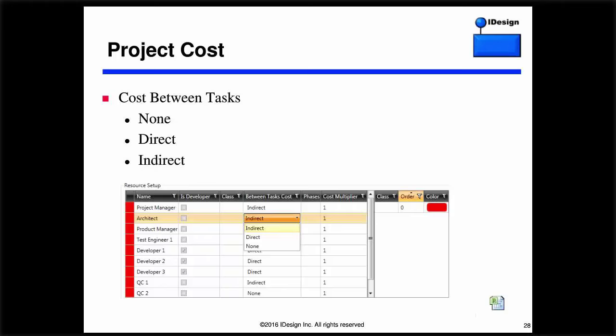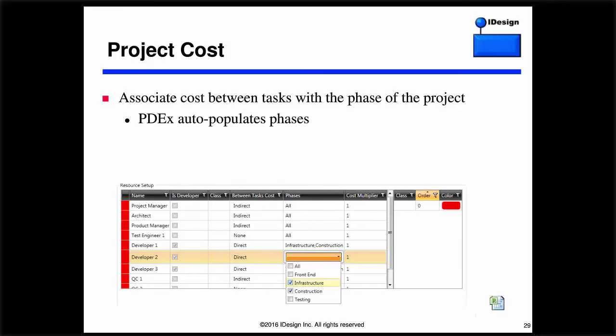Cost between tasks is also a function of the phases of the project. A developer in-between tasks may be counted as direct cost during construction, but why would you pay for that developer if you're still at the front end or testing phase? There's another column that lets you do the association of cost-between-tasks versus the phase of the project. For example, you can configure Developer 2 so that in-between tasks, only during infrastructure and construction, they are counted as direct cost. The phases here are auto-populated by PDX from whatever you put in the phase column.